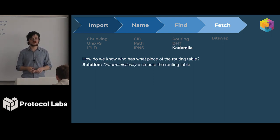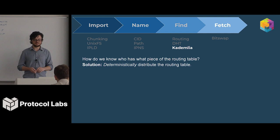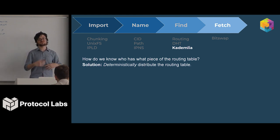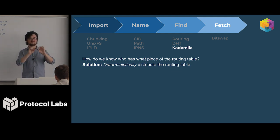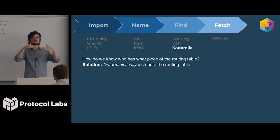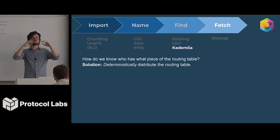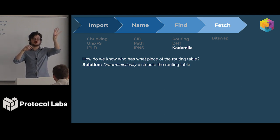We solve this using Kademlia. This is pretty common in decentralized systems — Kademlia is by far the most common distributed hash table. Basically, the solution is you deterministically distribute the routing table. Based on some piece of content you have, you find the peer that's responsible for remembering who has that content, and you tell that peer that you have it. Then when someone is trying to find that content, they find the peer responsible for remembering, and ask who has it.